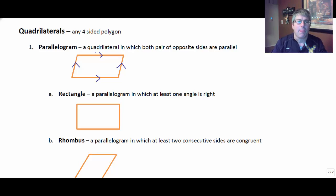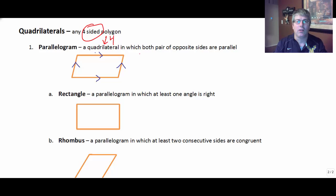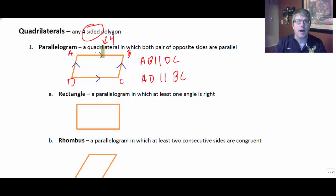Moving on to quadrilaterals — just going to define a few different types. A parallelogram is a quadrilateral, so it's a four-sided figure. Any four-sided polygon is a quadrilateral. It's a quadrilateral in which both pairs of opposite sides are parallel. So these arrows mean those particular sides are parallel. If I labeled my parallelogram, we would say AB is parallel to DC, and AD is parallel to BC. We know that by the arrows on the diagram.